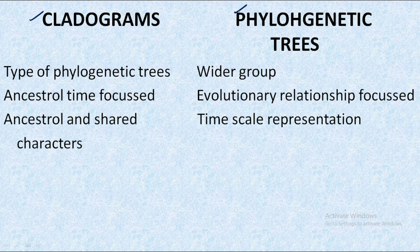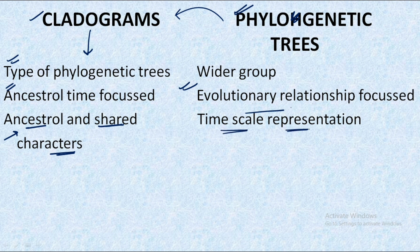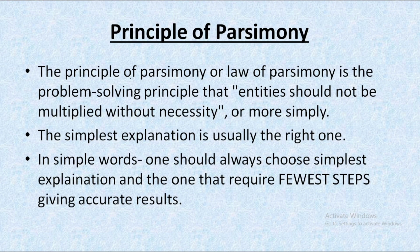Now let's understand the difference between cladograms and phylogenetic trees. Cladograms are a type of phylogenetic tree where we mainly represent ancestral time and focus on ancestral and shared characters. Phylogenetic trees, of which cladograms are a subtype, mainly focus on evolutionary relationships and give more priority to time scale representation, whereas cladograms mainly represent ancestral and shared characters.